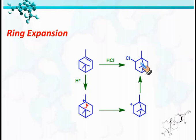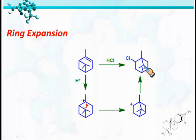The driving force of this reaction is that the four-membered ring in the starting material is converted into the five-membered ring in the product, so ring strain is relieved in this process. Due to this reason, when this compound is treated with HCl, it forms this compound.